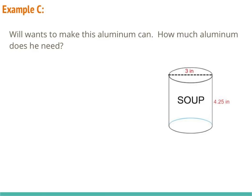In example C, Will wants to make this aluminum can. How much aluminum does he need? So this is another example of a surface area problem. Looking at our formula sheet, the surface area formula for a cylinder is 2πr² plus 2πrh. We'll need to know our radius and height. The radius is half of the diameter, and since our diameter is 3 inches, half of that is 1.5 inches. So that is our radius.